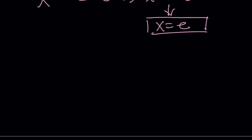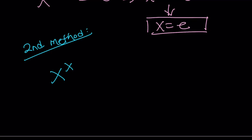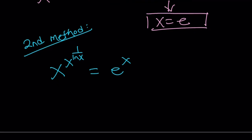Now let's take a look at the second method. For the second method I use a different approach, even though it turns out to be pretty much the same thing — at some point we have to take ln of both sides to bring all the powers down. We have x to the power x to the power 1 over ln x equals e to the power x.